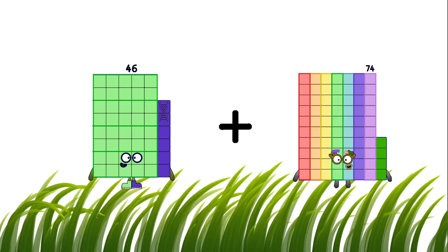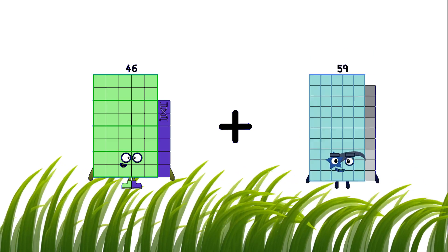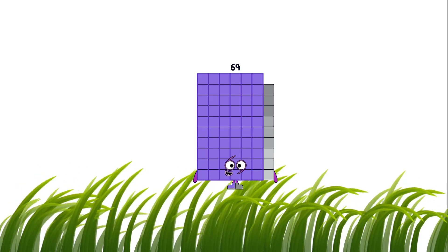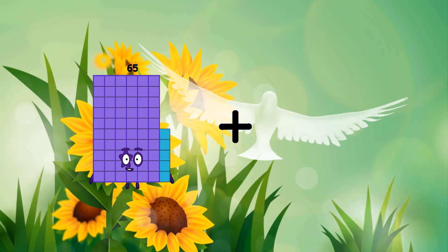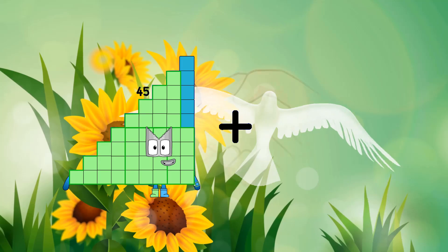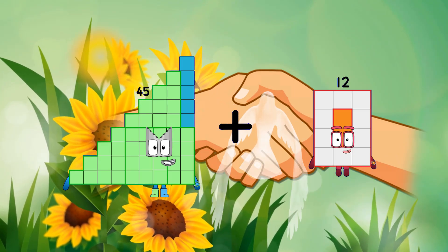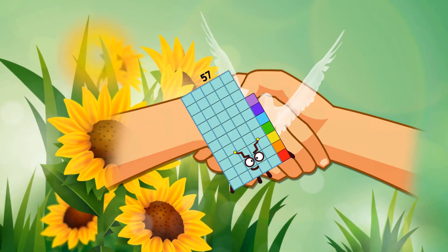46 plus 23 equals 69. 45 plus 12 equals 57.